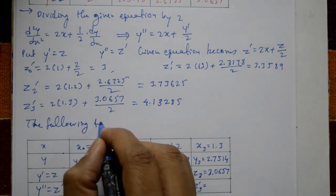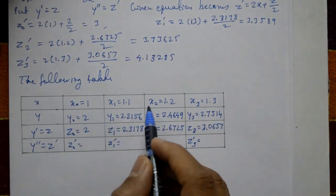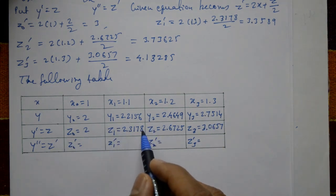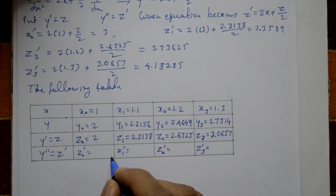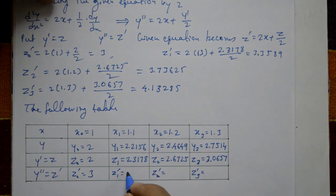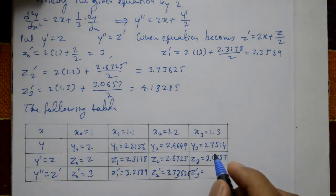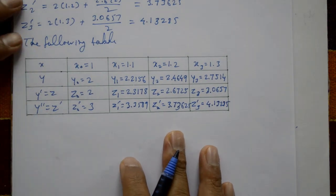Now construct the following table with values: x0, x1, x2, x3; y0, y1, y2, y3; z0, z1, z2, z3; and the z dash values: z0 dash = 3, z1 dash = 3.3589, z2 dash = 3.73625, z3 dash = 4.13285.